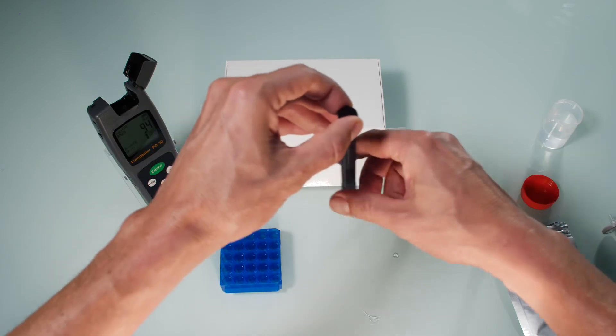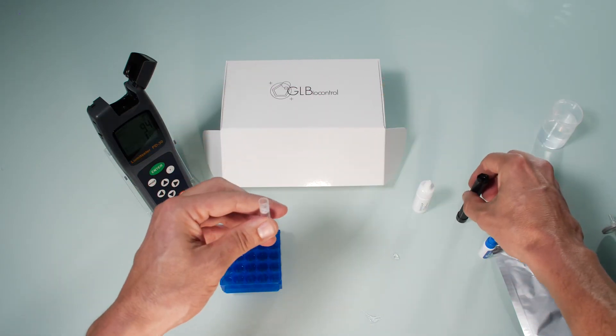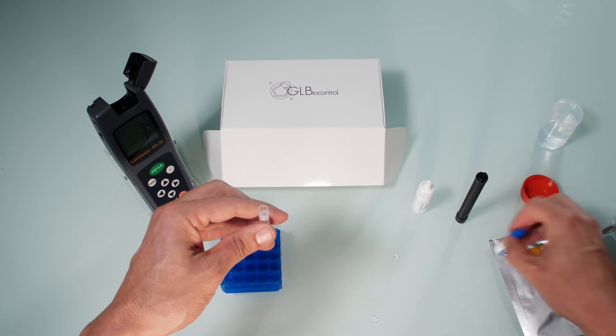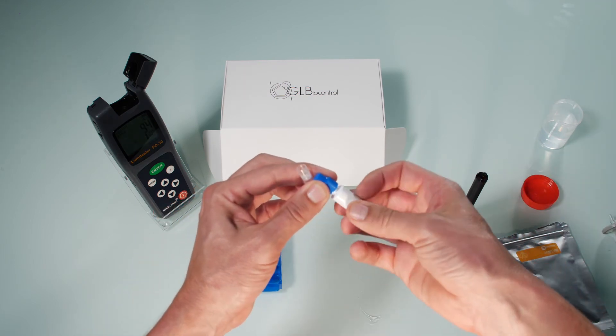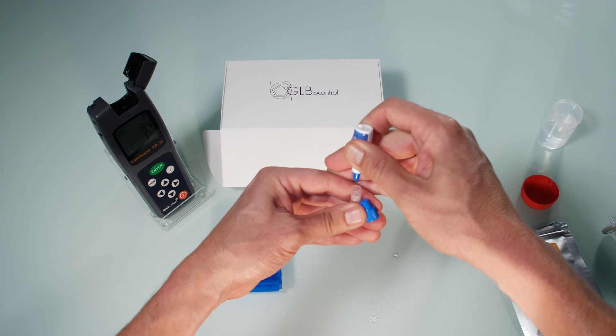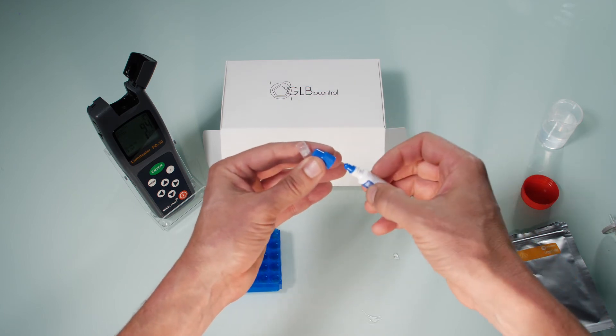Open the lid and take out the lumi tube. Add just one drop of standard into the tube. Don't insert the tip of the dropper bottle into the lumi tube to ensure a correct calibration.